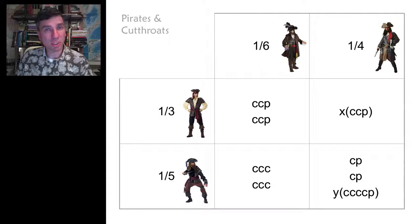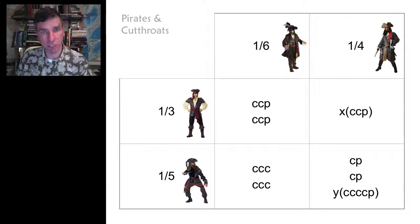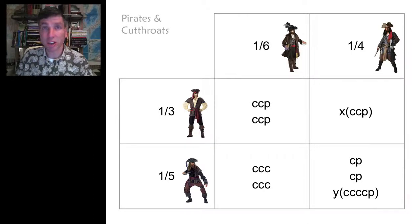You might like to explore this problem more deeply. Here we have a puzzle where there's one-sixth in the two leftmost jail cells that are pirates, one-quarter in the rightmost jail cells, one-third in the uppermost jail cells, and one-fifth in the lower jail cells that are pirates. Obviously, a tougher problem.